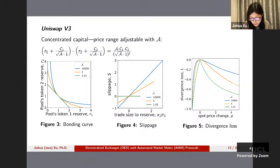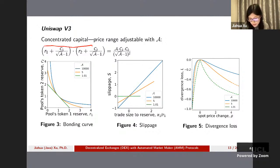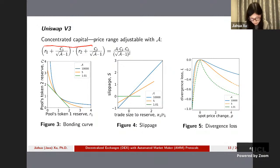With Uniswap V3's concentrated liquidity, instead of allowing liquidity to serve traders at any price point, you can specify that your liquidity only serves traders within a certain price range. This gives a slightly different bonding curve, and the slippage and divergence loss also look a little different. You're welcome to look at the mathematical derivation in the paper and play with the open source code on GitHub.